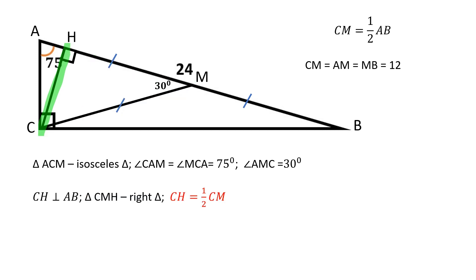The short leg is half the size of the hypotenuse. CH is equal to half the size of CM. CH is equal to 6.